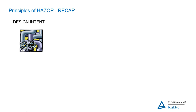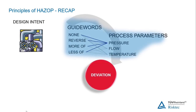The main thought processes that need to be established are: what is the intention of the node — what do we expect to happen in this particular piece of equipment or at this stage in the operation? What possible deviations from design intent may occur? What can go wrong? We do this by taking a series of guide words and applying them to parameters to produce deviations.